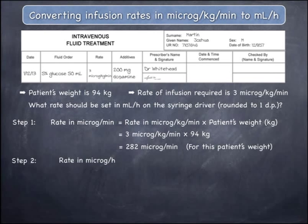In the next step, convert the rate in micrograms per minute to a rate in micrograms per hour. We want to change to a unit of hours because the final rate required is mils per hour, not mils per minute. Multiply 282 micrograms per minute by 60 minutes per hour, which gives 16,920 micrograms per hour.